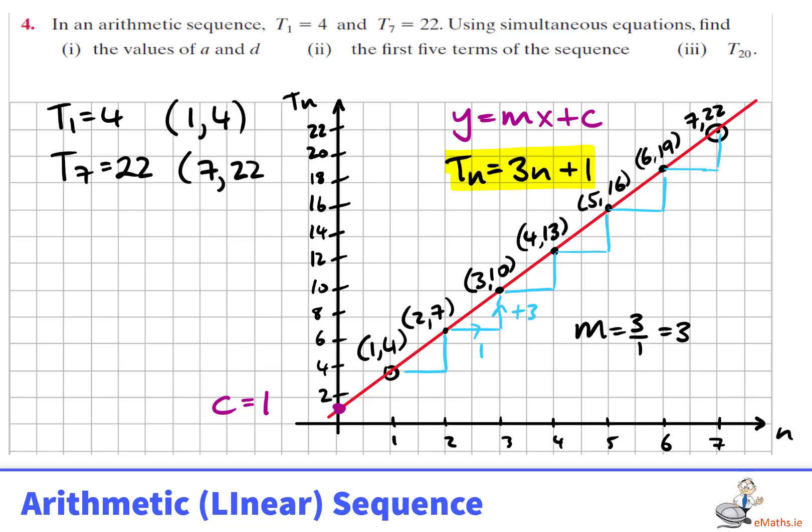We could also see from the points along the line that the first five terms are given, including term a, the first term. And we can see using the equation of this line, 3n plus 1, the term 20 must be 3 times 20 plus 1, giving us 61.